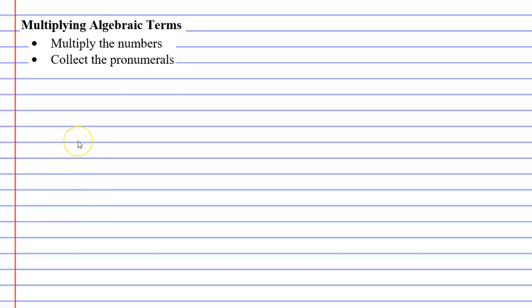This video is titled multiplying algebraic terms, and when you do this there are two steps to take. The two steps are to multiply the numbers and second of all to collect the pronumerals. In this video we're going to show you how we do this and also why we do this.